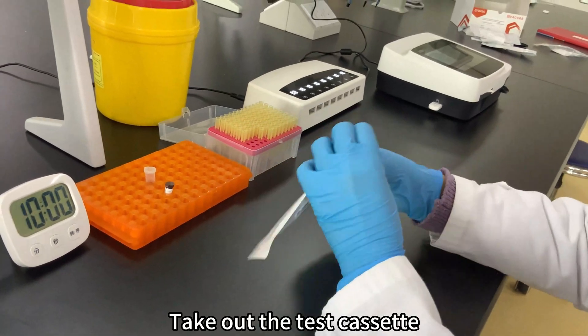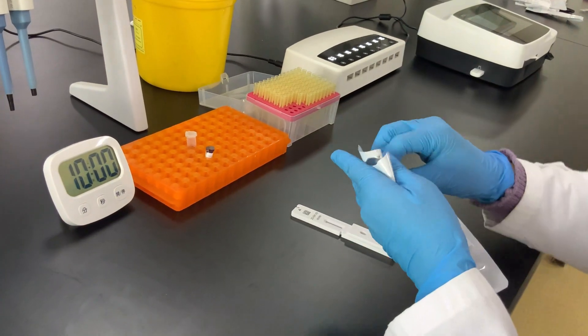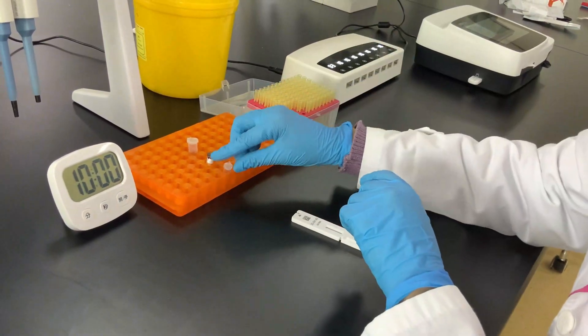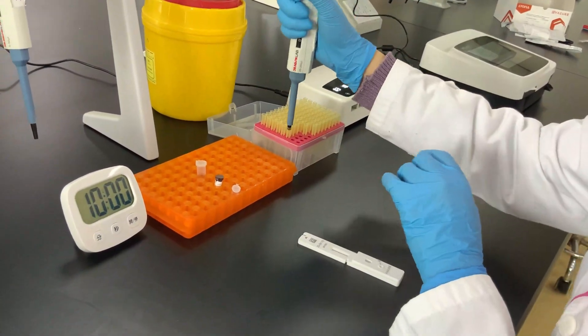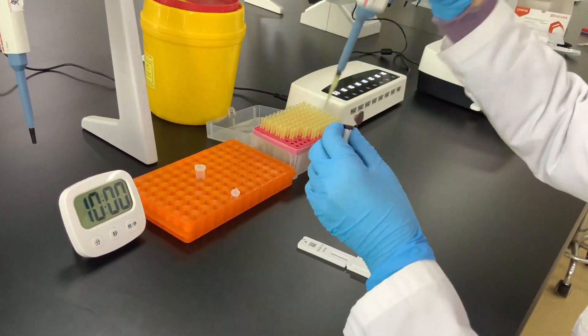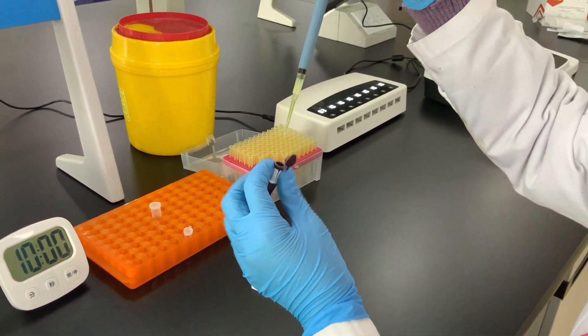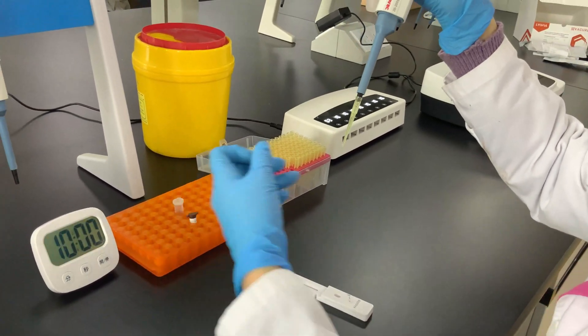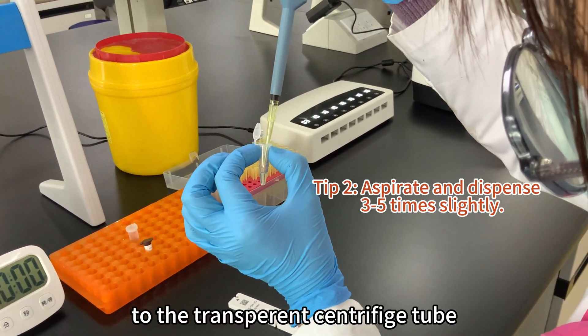Take out the test cassette. Pipette 90 microliter sample diluent to the transparent centrifuge tube.